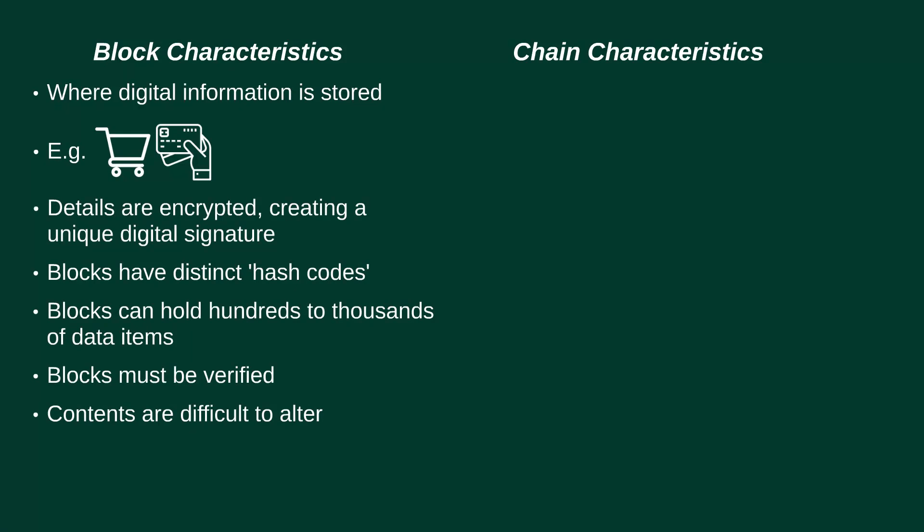The information about your transaction is encrypted so that the store details are turned into a unique digital signature. Each block is given a unique hash code which distinguishes it from other blocks. Importantly, a block isn't just holding your single transaction — a block can hold hundreds or thousands of items of data, such as many Bitcoin transactions. The block must also be verified, in our example by the retailer, to confirm the value and details of the purchase. One vital thing to realize is that it's very difficult to alter the contents of a block.